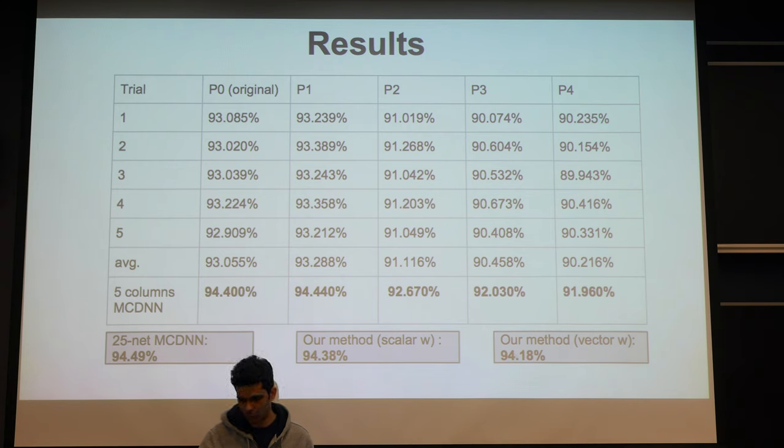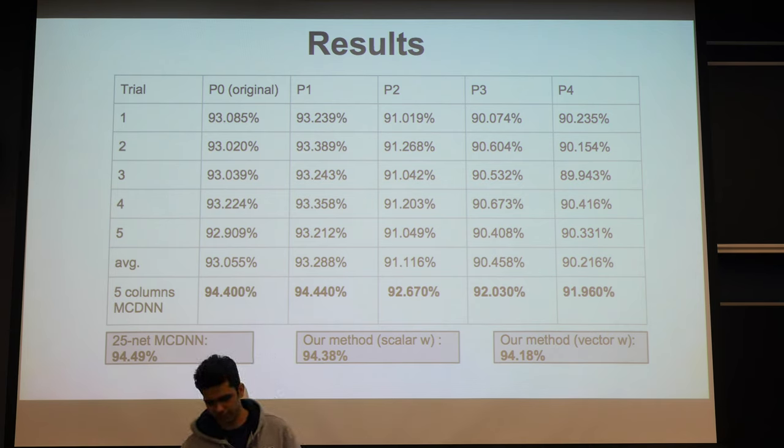And both of them essentially perform similar to the 25-net MCDNN. We couldn't outperform it. We think that's because the features that we're extracting are essentially very simple. They're basically SIFT and HOG features. And we think that we need more complex features from the test image to essentially discriminate between inputs coming from different MCDNNs.